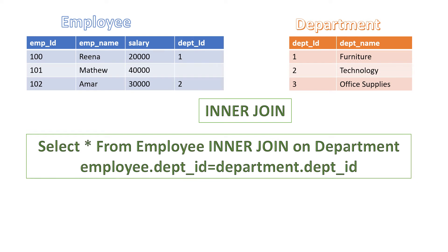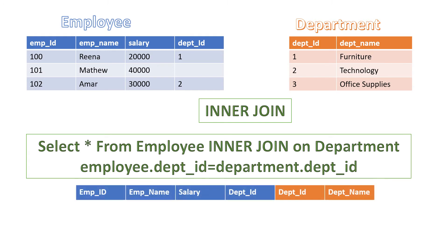SELECT * FROM employee INNER JOIN department ON employee.department_id = department.department_id. Since we are writing star in the SELECT statement, we get all the columns from both tables.